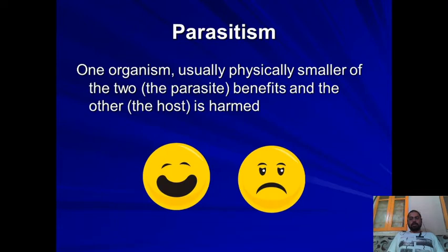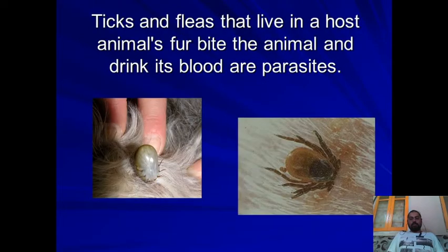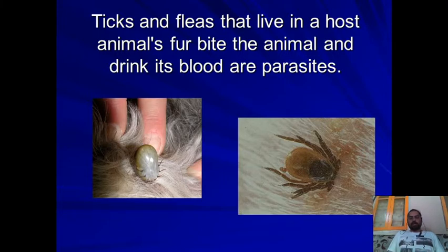The second interaction is parasitism, where one animal is physically smaller than the other, the parasite benefits, and the host is always harmed. There are many examples of parasites. Ticks and fleas are called ectoparasites. Certain animals are also called endoparasites, such as the liver fluke and malarial parasites, where the host is harmed and the parasite is benefited.